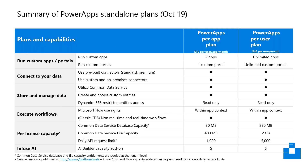Looking at a comparison of the two plans, we can see two apps versus unlimited apps, one custom portal versus unlimited custom portals. The other features are largely the same until you get down to the Common Data Service database capacity, where we do have a higher capacity, which would be expected with more apps.